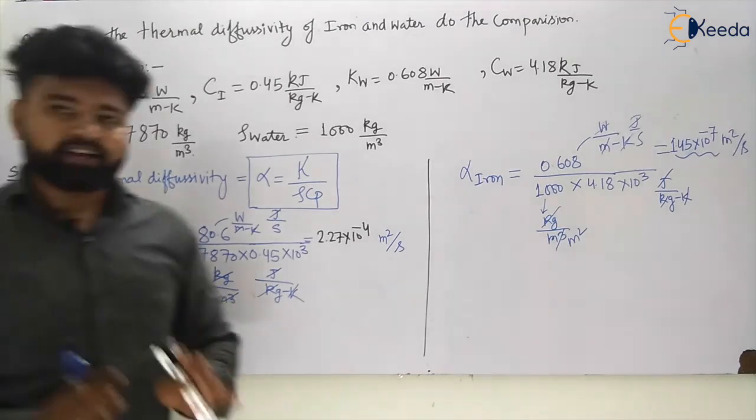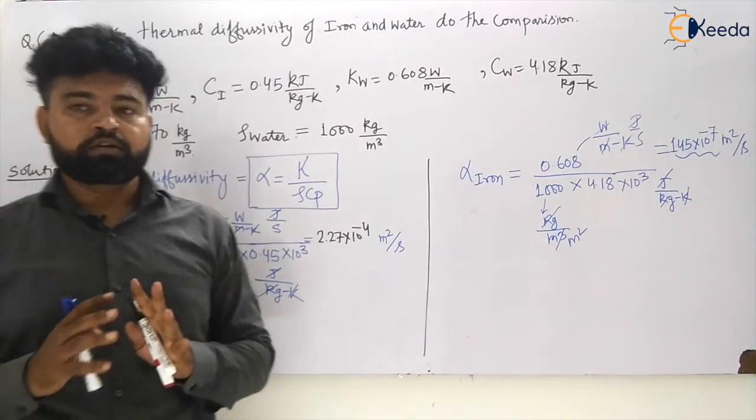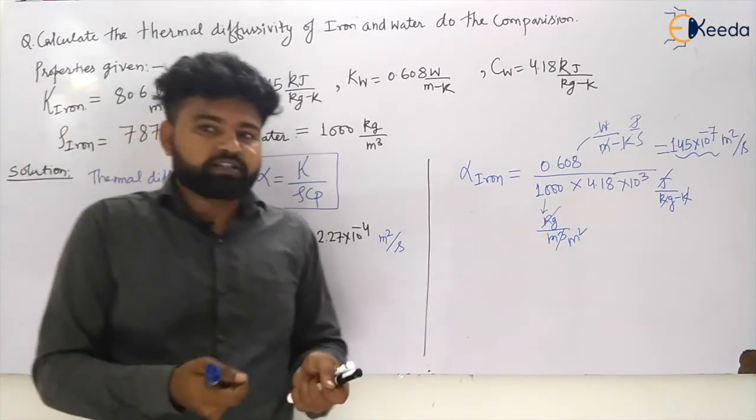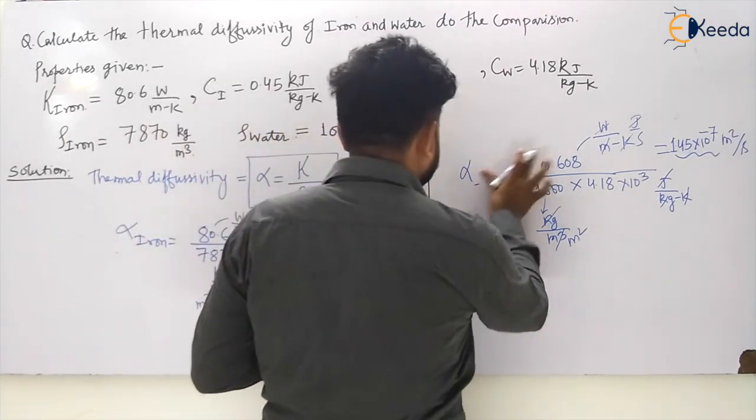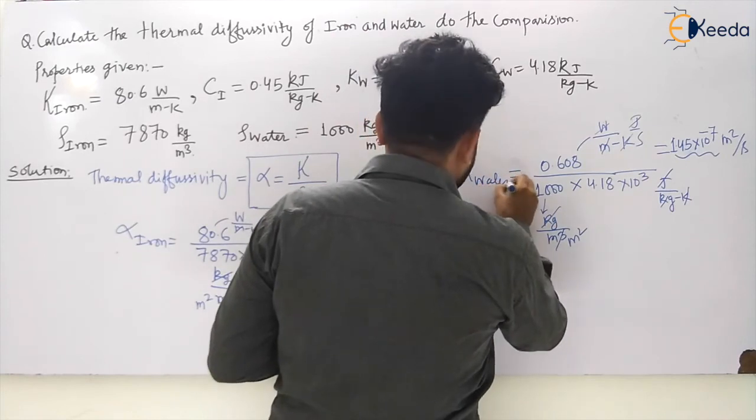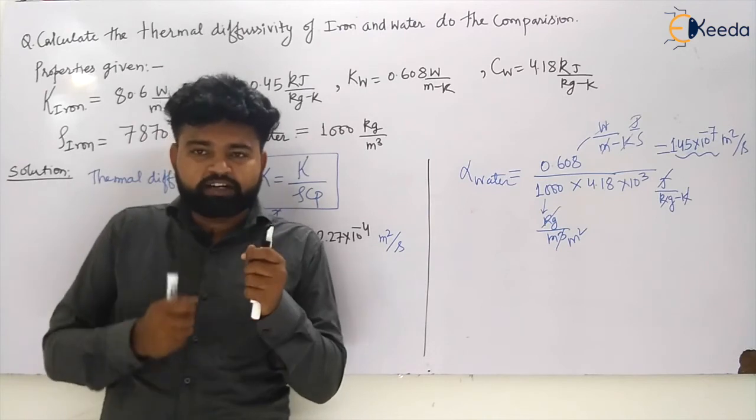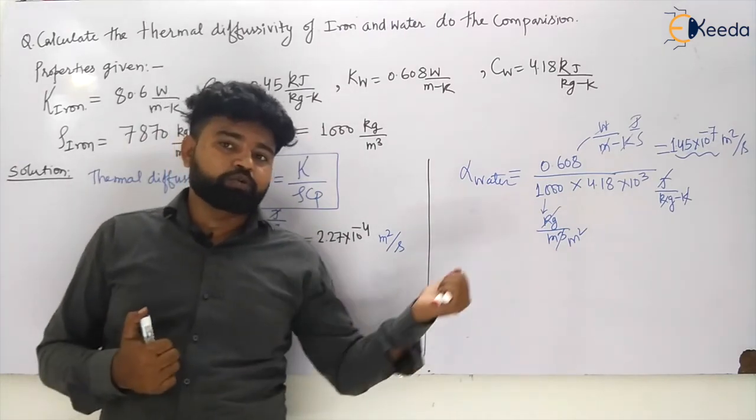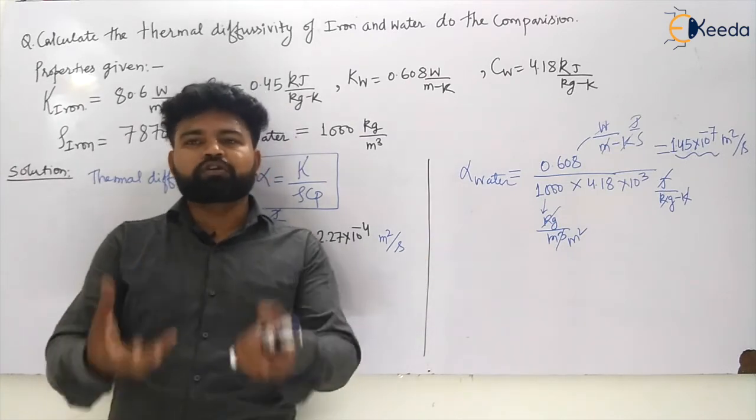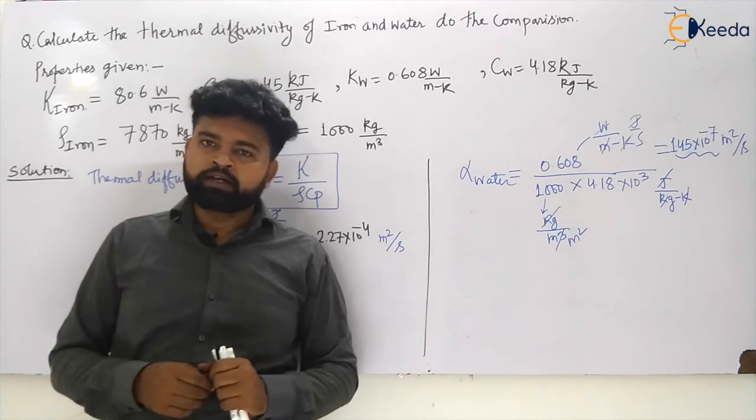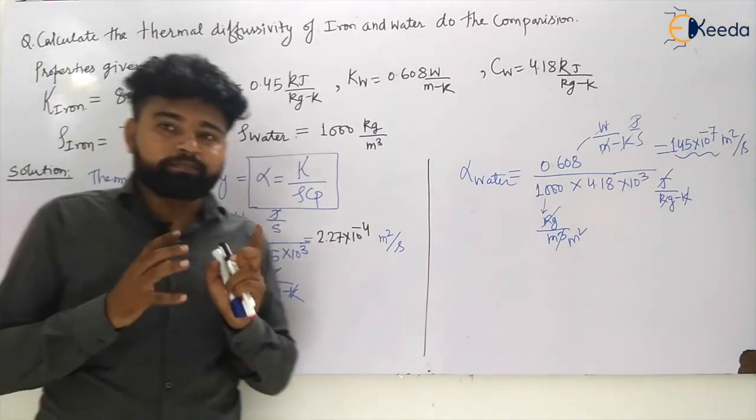So thermal diffusivity of iron is very high compared to the thermal diffusivity of the water. So the iron will conduct heat fast in comparison to the water. Water will conduct heat in a slow manner. Iron will conduct heat in a very fast manner in comparison to the water because water is having low thermal diffusivity. So water will try to absorb all the heat rather than conducting it throughout. So conclusion is that this is useful for better heat transfer.